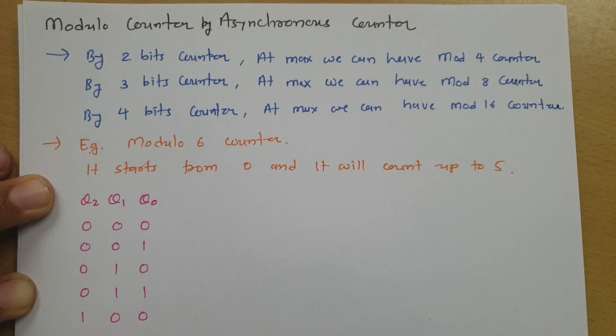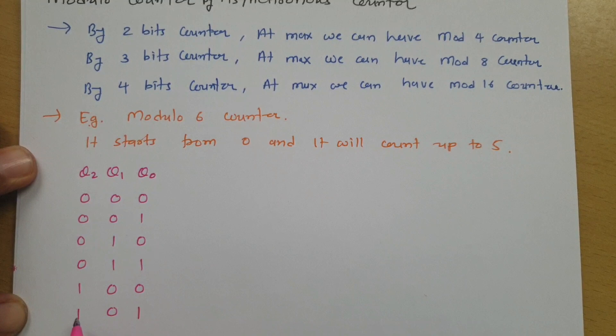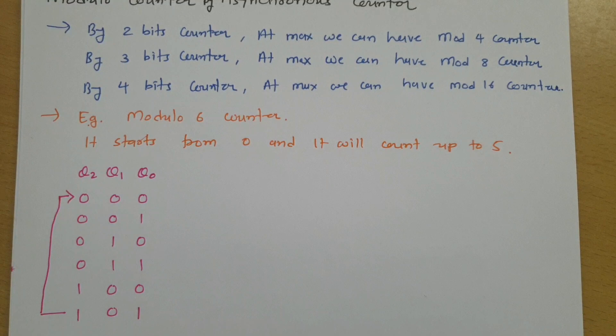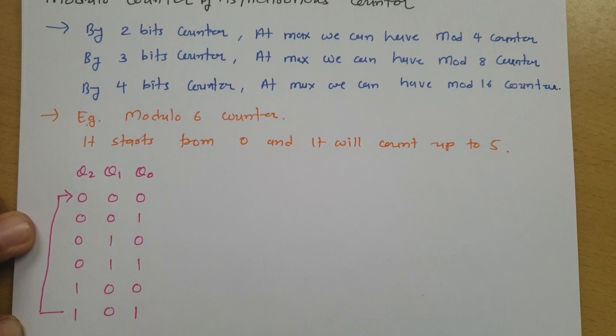Once the count completes up to five, it should restart from zero-zero-zero. Since the count goes from zero to five and then back to zero, we call this a modulo-6 counter. Let us try to design this step by step.